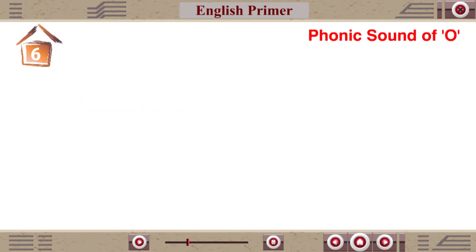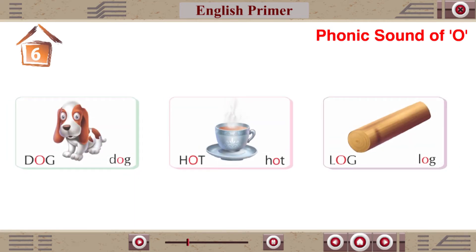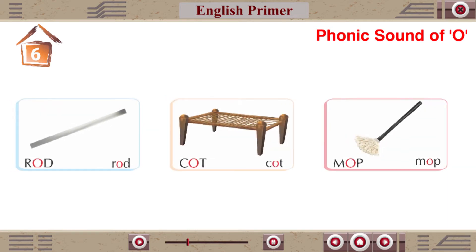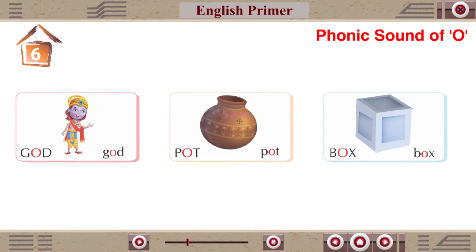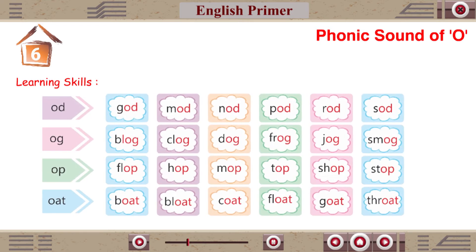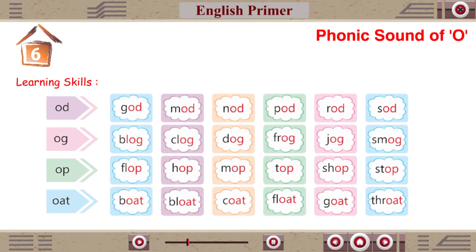Chapter 6: Phonic Sound of O. Dog, Hot, Lock, Rot, Cot, Mock, God, Pot, Box. Learning Skills: Nod, Pod, Rod, Block, Clock, Dog, Frog, Mock, Flop, Hop, Top, Shop, Stop, Pod, Cod, God.